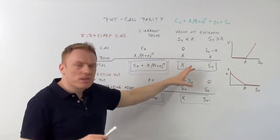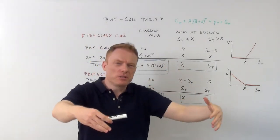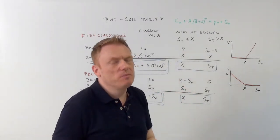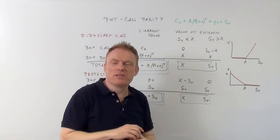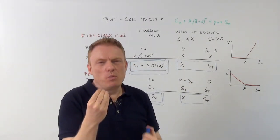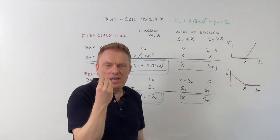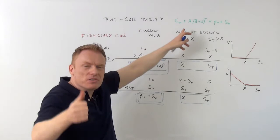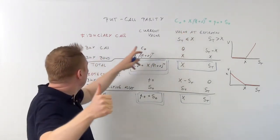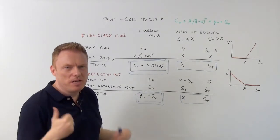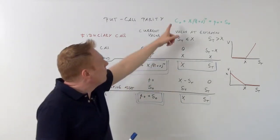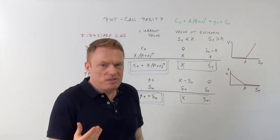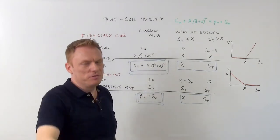Because first we look at the future, and then we deduce that the values also have to be the same right now. As I said at the beginning, we look at the value of a put and of a call at the same time — buying a call and buying a put — so C sub-zero and P sub-zero play an important role in this formula of put-call parity. Thank you for watching.